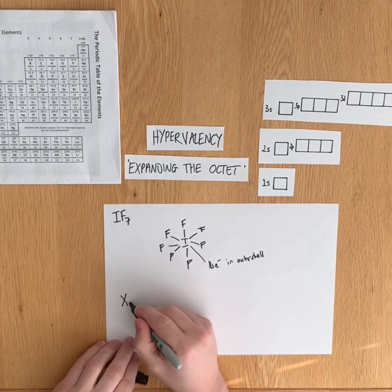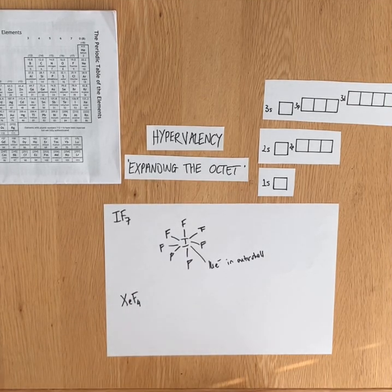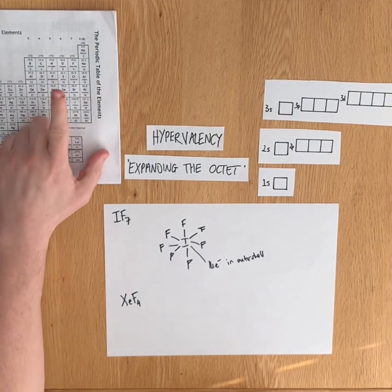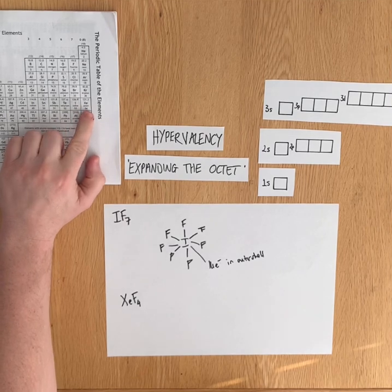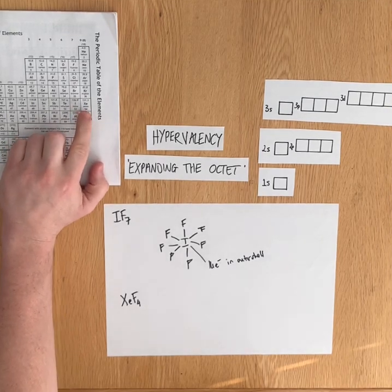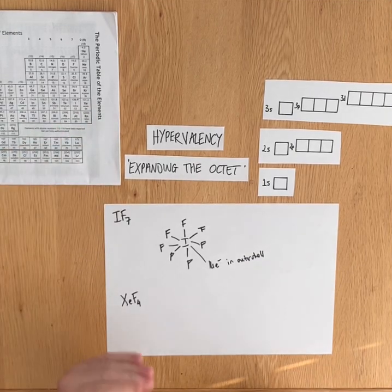Another famous example of an expanded octet is xenon pentafluoride. Xenon has a full outer shell. Xenon all the way down here next to iodine—five energy levels, five shells—is also able to expand its octet with fluorine.